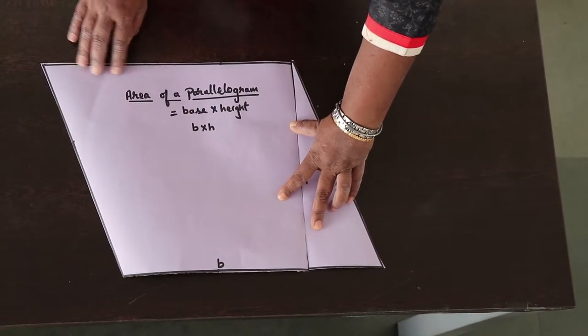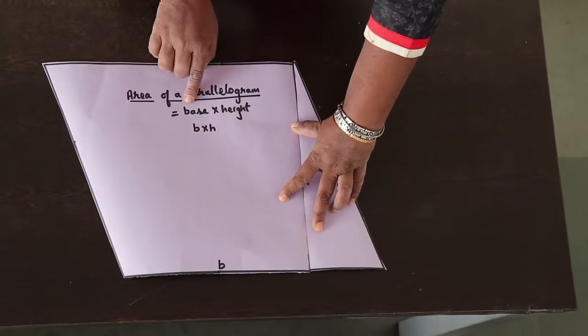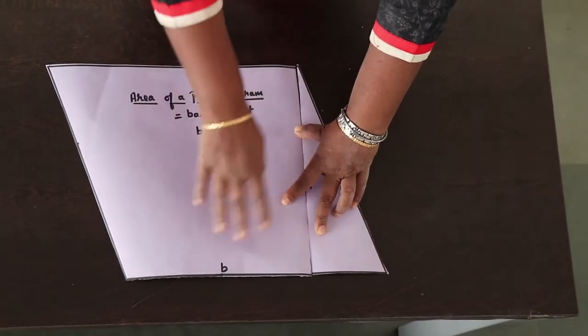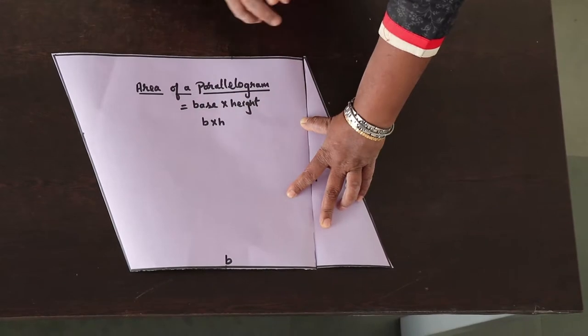Now we all know that area of a parallelogram is base into height. Now let's prove this with the help of this paper cutting activity.